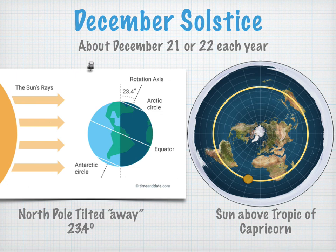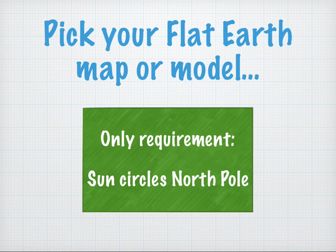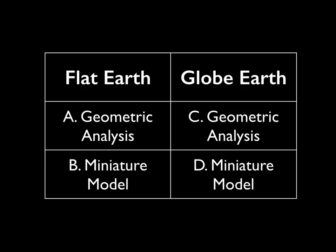In the globe Earth model, in the December solstice, the North Pole is tilted away at 23.4 degrees. That means that the sun is more directly shining on the Tropic of Capricorn, which is the southern tropic south of the equator. On the flat Earth model, the sun is circling the North Pole, but it is doing so above the Tropic of Capricorn. We're going to do a four-part analysis. For both flat Earth and globe Earth, we're going to first do a geometric analysis and then follow that up with a miniature model to see how our predictions stack up.